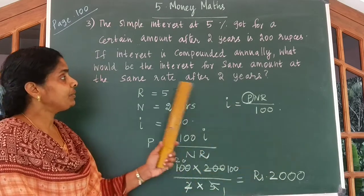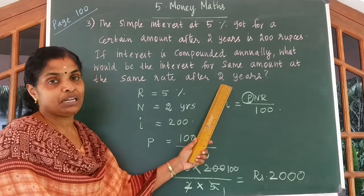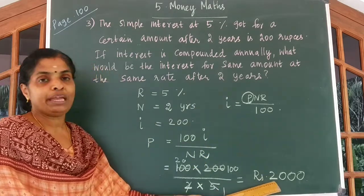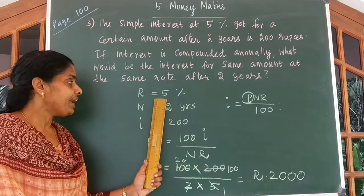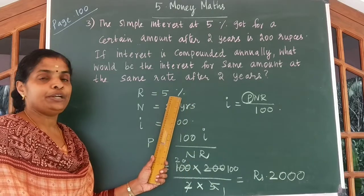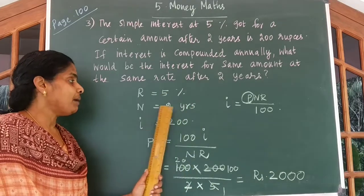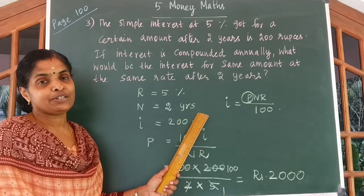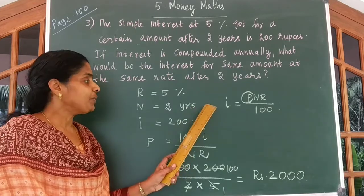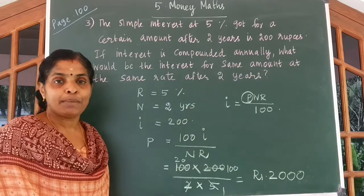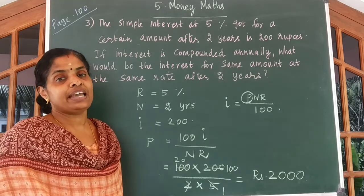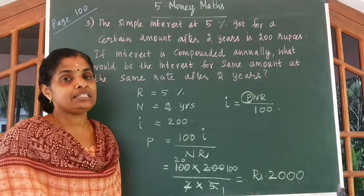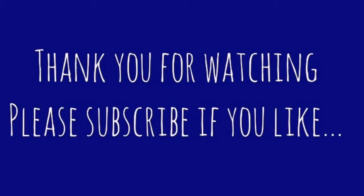Now you have to complete this problem by taking P = ₹2,000, rate = 5%, and number of years = 2. I hope you can do it by yourself. The next exercise we will be discussing in our next class. Thank you.